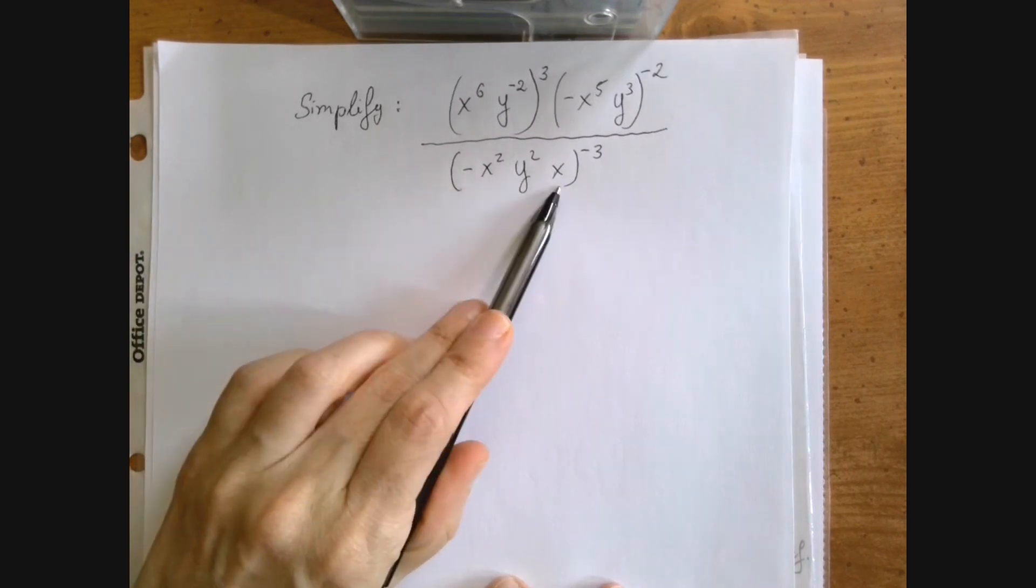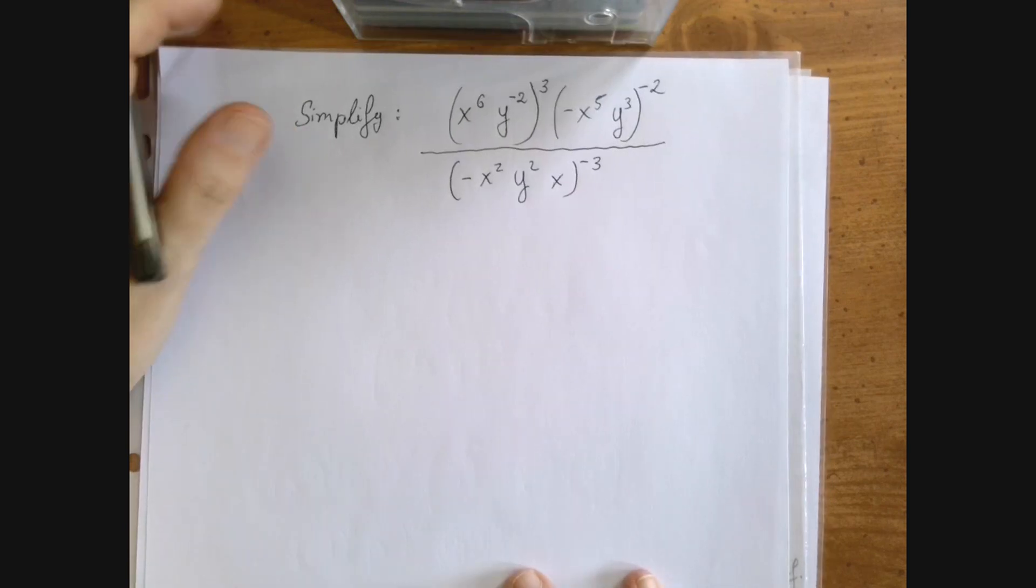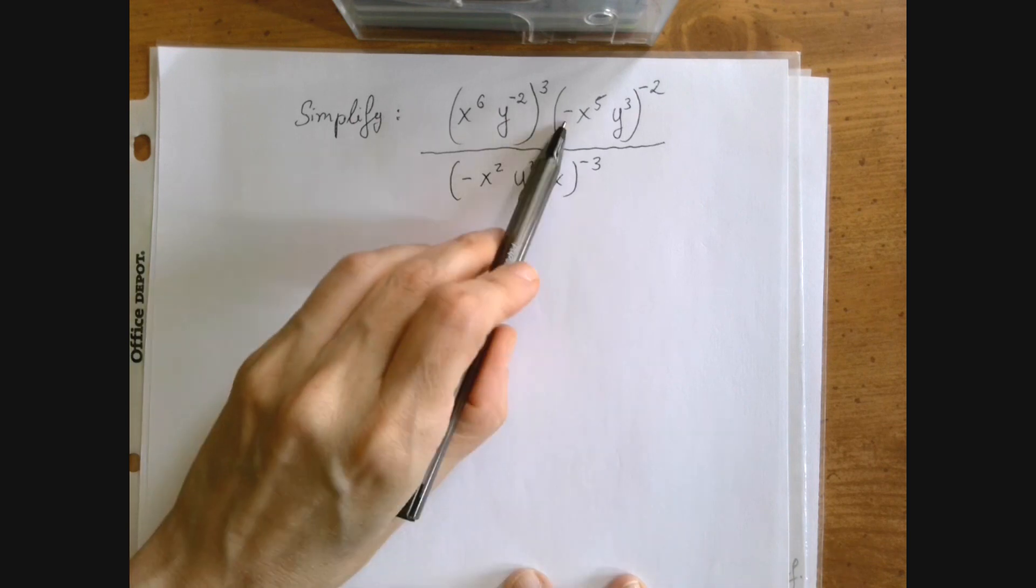You see this x squared and x, I would like to consolidate them into one expression, and I want to deal with these negative signs because they are the dangerous parts of the problem. We can rewrite negative x to the 5 as x to the 5 multiplied by the number negative 1, and then we can treat negative 1 as a separate factor, so this is a three-factor problem.